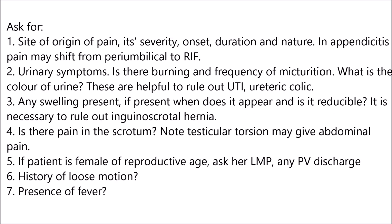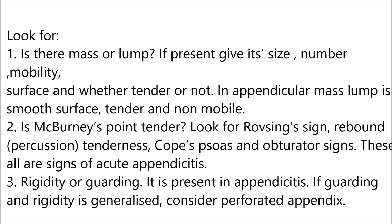In case of right iliac fossa pain, ask for the site of origin of pain, severity, onset, duration, and nature. In appendicitis, pain may shift from periumbilical to right iliac fossa. Ask about urinary symptoms — burning and frequency of micturition, color of urine — to rule out urinary tract infection and ureteric colic. Is there any swelling, and is it reducible? Rule out inguinoscrotal hernia. Is there pain in the scrotum? Note that testicular torsion may cause abdominal pain. If the patient is female, ask for the last menstrual period and PV discharge. History of loose motions and fever. Look for any mass or lump — give its size, number, mobility, surface, and whether tender.